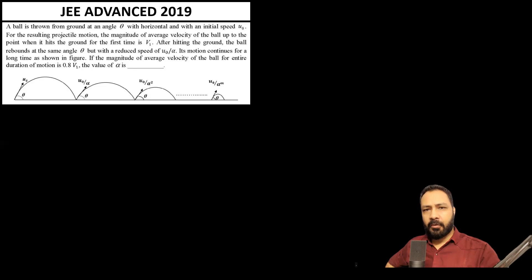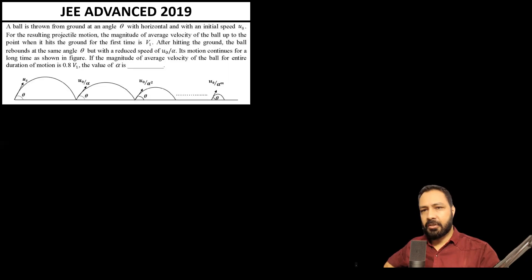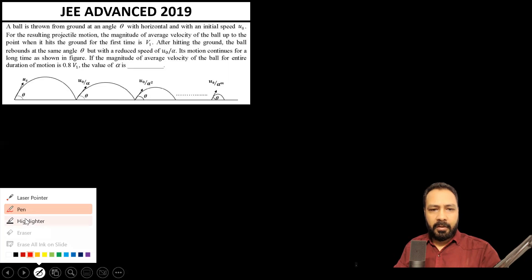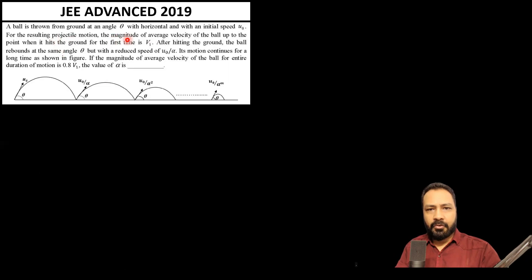Hello and welcome to the Quantum Guru. Let's look at this IIT JEE Advanced 2019 question, which involves two concepts: collision and projectile motion. The question states: a ball is thrown from the ground at an angle theta with the horizontal, with an initial speed u-naught. For the resulting projectile motion, the magnitude of the average velocity of the ball up to the point where it hits the ground for the first time is v1.